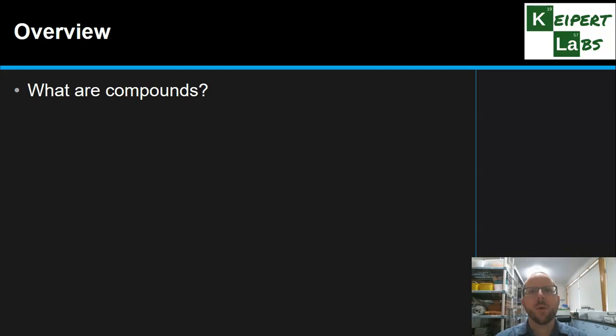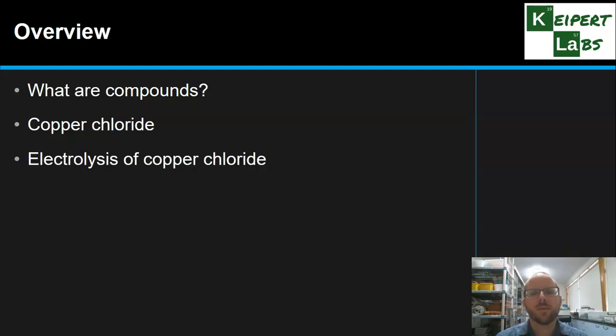So we're going to remind ourselves of what are compounds. We're going to then focus specifically on copper chloride. In this particular demonstration it's going to tell us some useful things about different types of compounds. We're then going to look at a time-lapse video of the electrolysis of this compound when it's dissolved in water. We're going to discuss some of the observations we can make and then be able to make up some conclusions about what copper chloride is made of.